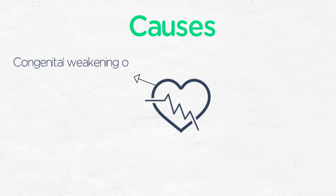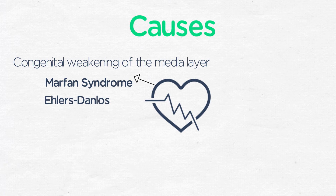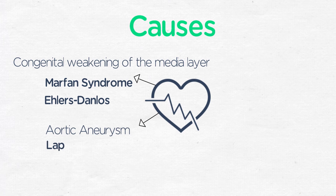People with congenital weakening of the media layer are prone to aortic dissection. Marfan syndrome is a hereditary disease of elastin and Ehlers-Danlos is a hereditary disease of collagen. The association of Marfan disease with aortic aneurysms and dissections often shows up on tests. Aortic aneurysms predispose to dissection according to Laplace's law, which states that the larger the vessel radius, the greater the wall tension required to withstand the internal fluid pressure.